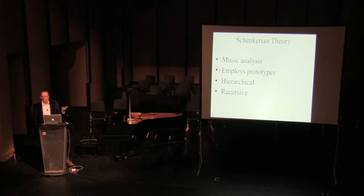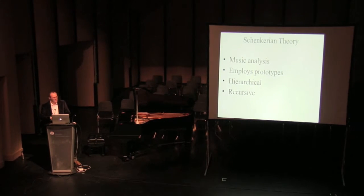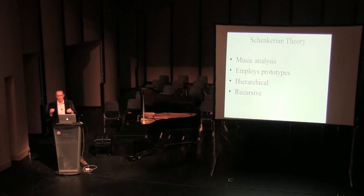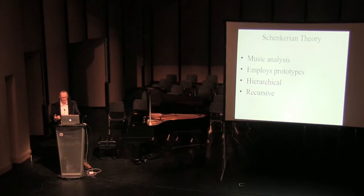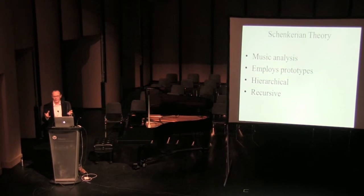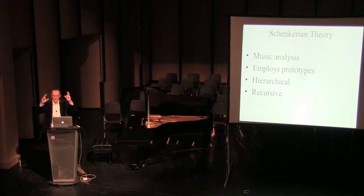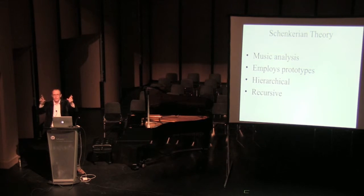We use Schenkerian theory for tonal music, looking at music basically from J.S. Bach up to Johannes Brahms. It uses prototypes or models to analyze this corpus, and these prototypes are hierarchical in that they produce levels of structure that come down from the prototype. Each of these levels is recursive, meaning we can apply a certain move or transformation at a high level of structure and keep applying that same move.